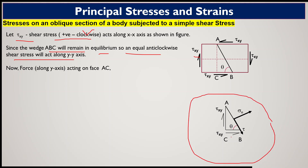Looking at wedge ABC carefully: AB is the plane under consideration on which we find the effect of shear stress acting on the body. Tau_xy acts vertically along face AC, and the counteracting tau_xy acts horizontally along face BC. Sigma_n is the stress in the normal direction to plane AB, and tau is the shear stress developed due to tau_xy in a direction parallel to plane AB.